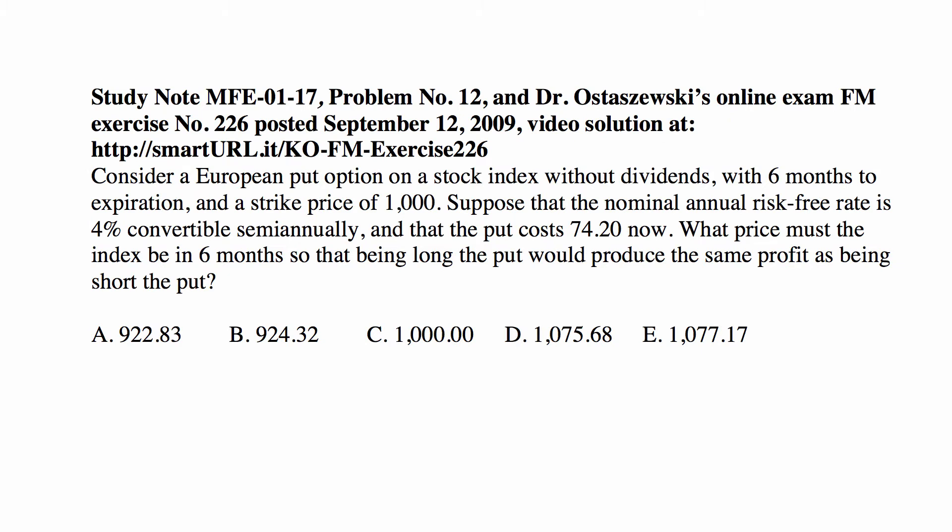So here's the problem. Consider a European put option on a stock index without dividends, with six months to expiration and a strike price of 1,000. Suppose that the nominal annual risk-free rate is 4% convertible semi-annually, and that the put costs 74.20 now.